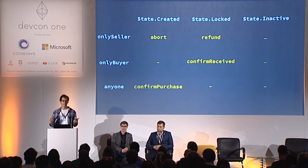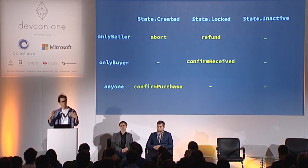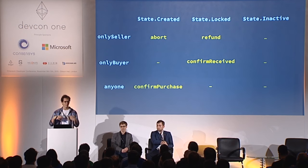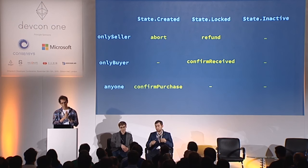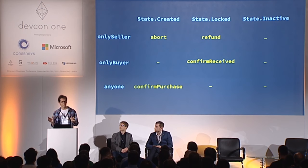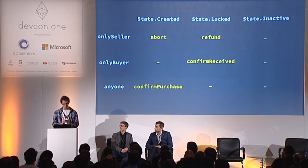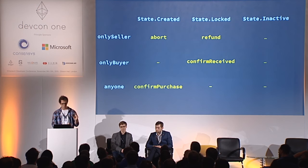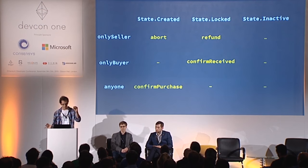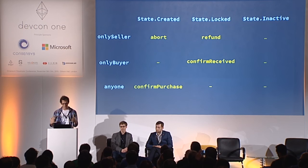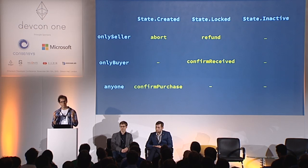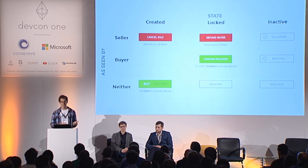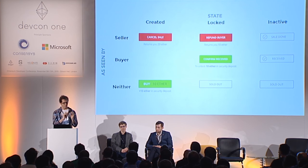A DApp can know who the other person is — it can ask the user for their account address to recognize them. The app knows whether it's talking to the seller, the buyer, or anyone else. And since the states don't all happen at once, there's actually always only one single function available at any time. If there's no buyer, the seller can abort or anyone can confirm the purchase. If there's already a buyer, the seller can refund and the buyer can confirm received.